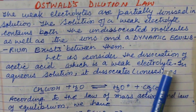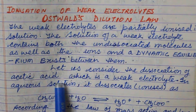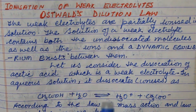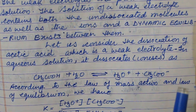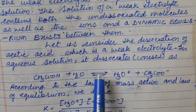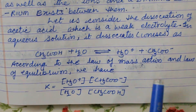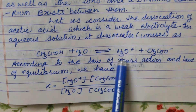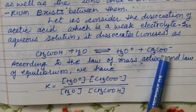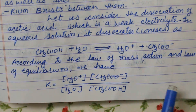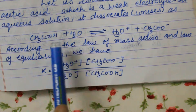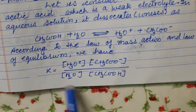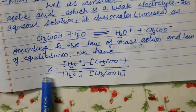Let us consider the dissociation of acetic acid, that is CH3COOH, which is a weak electrolyte like vinegar. In aqueous solution, it dissociates or ionizes — this is the hydronium ion and this is the acetate ion. According to the law of mass action and law of equilibrium, we have the product as the numerator and the reactant as the denominator. This is the equilibrium constant.